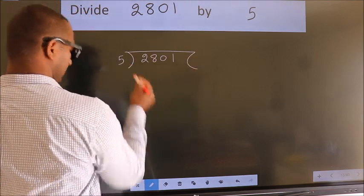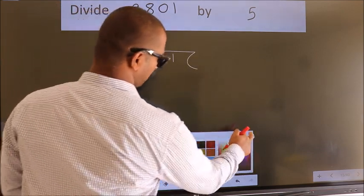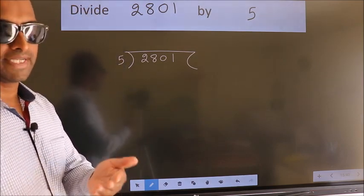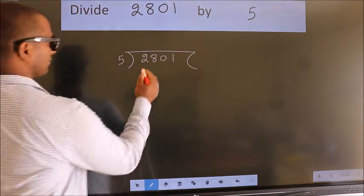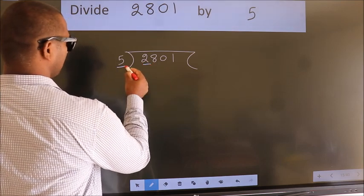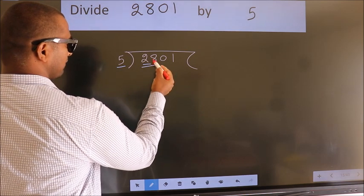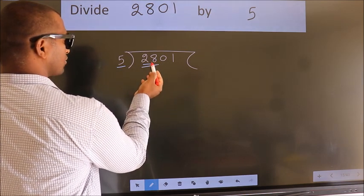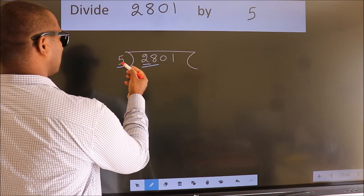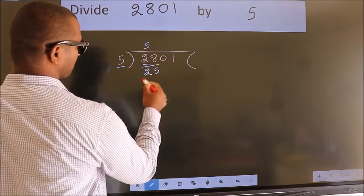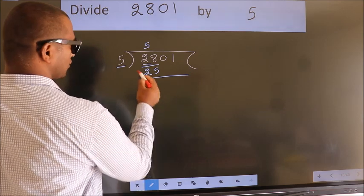5 here, this is your step 1. Next, here we have 2, here 5. 2 is smaller than 5, so we should take two numbers: 28. A number close to 28 in 5 table is five fives 25. Now we should subtract.